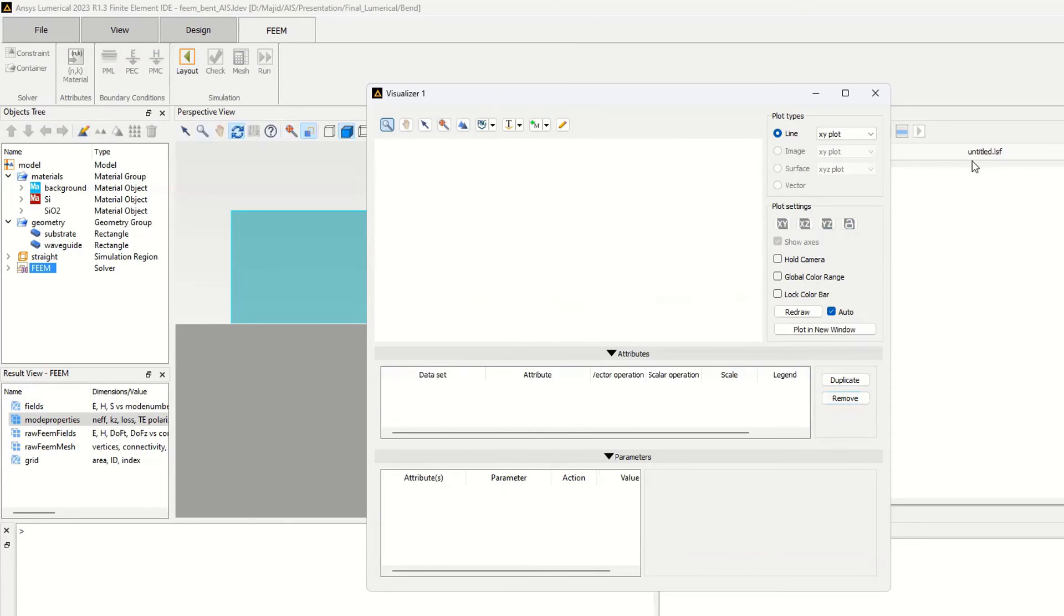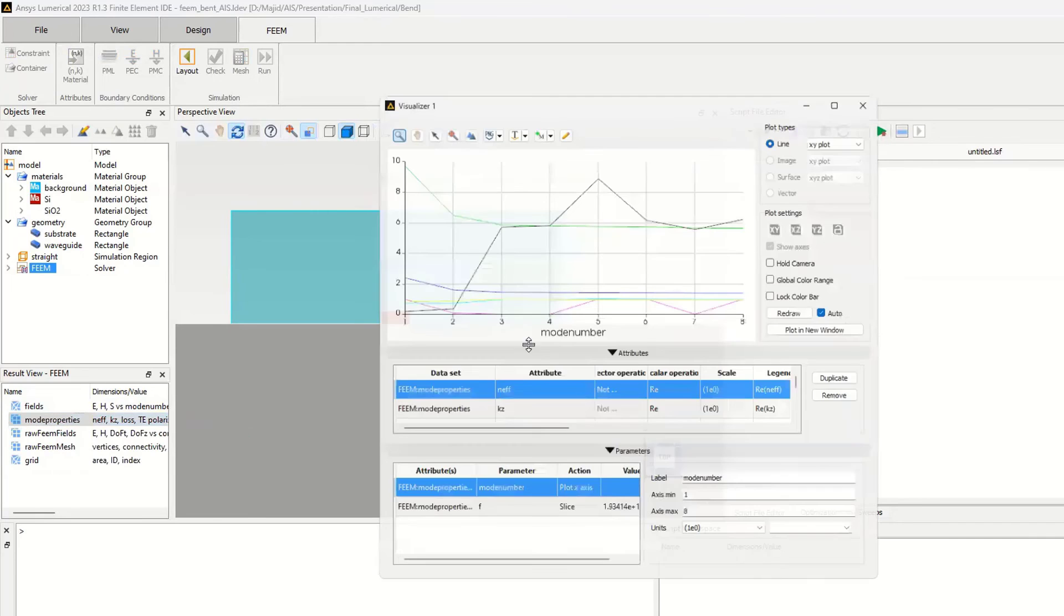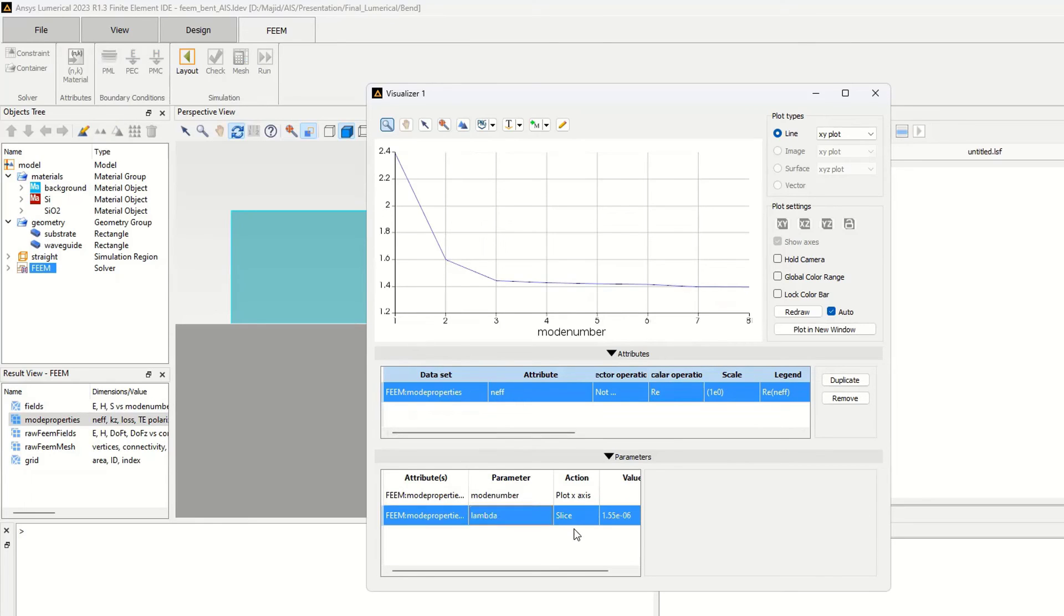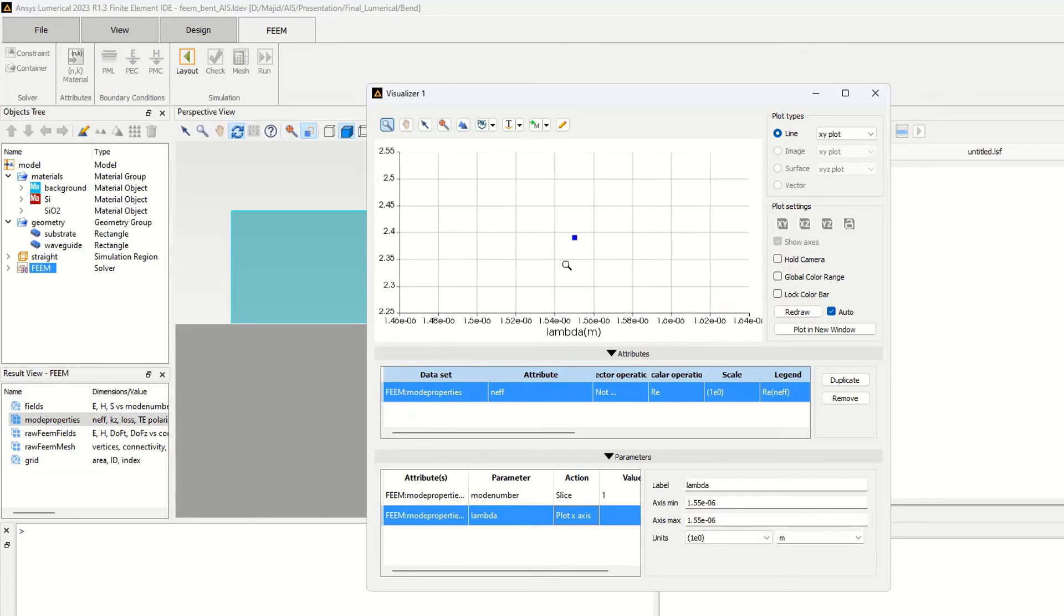In the mode properties, if I select the mode property and click visualize new visualizer, I select effective index. The real part of the effective index - in the X direction I can select wavelength. For the first mode is 2.4, for second mode the effective index is 1.6, it means that this is a leaky mode. Let's focus on the first mode. I change this one to lambda and in the action part I select plot X axis. About the unit, I select micrometer. Now we can see that at 1.55, the effective index is 2.3904.